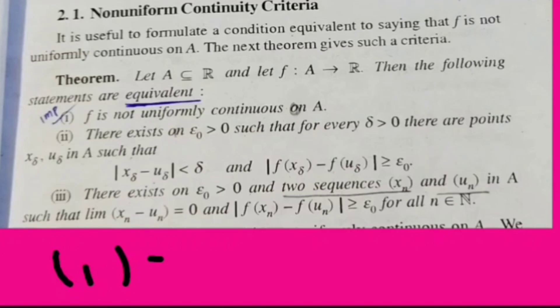Such that the limit of xn minus un is equal to 0 in mode, and f(xn) minus f(un) is greater than or equal to epsilon-not, for all n belonging to N.